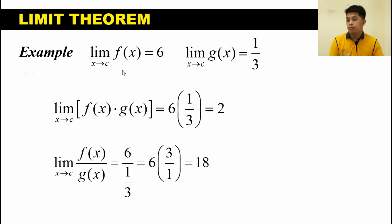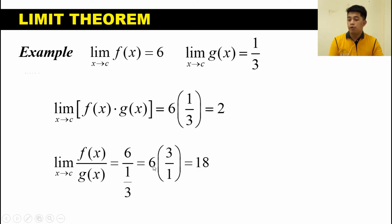For the quotient of the two functions, we have the limit of F of X over G of X as X approaches C, which equals the quotient of the individual limits. So we have 6 over 1 third. Since our denominator is a fraction, we multiply the numerator by the reciprocal of the denominator: 6 times 3 over 1 equals 18. Therefore, the limit of F of X over G of X as X approaches C is equal to 18.